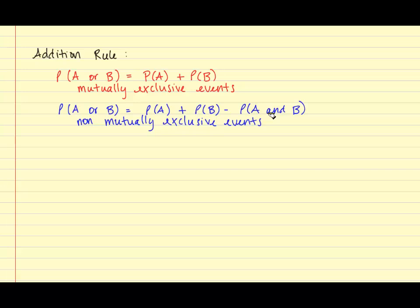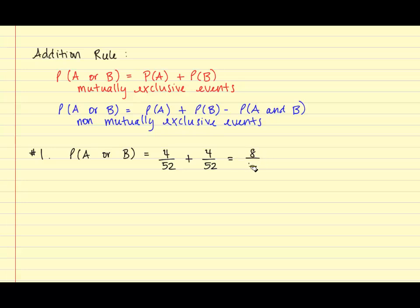For our first example, we are going to use the first formula because there are not any cards in common between a king and a queen in a deck of cards. So for example one, the probability of A or B is equal to the probability of A, which is 4 out of 52, plus the probability of B, which is 4 out of 52 — you have 4 kings and 4 queens in the deck. Thus we have 8 out of 52, which reduces to 2 over 13.